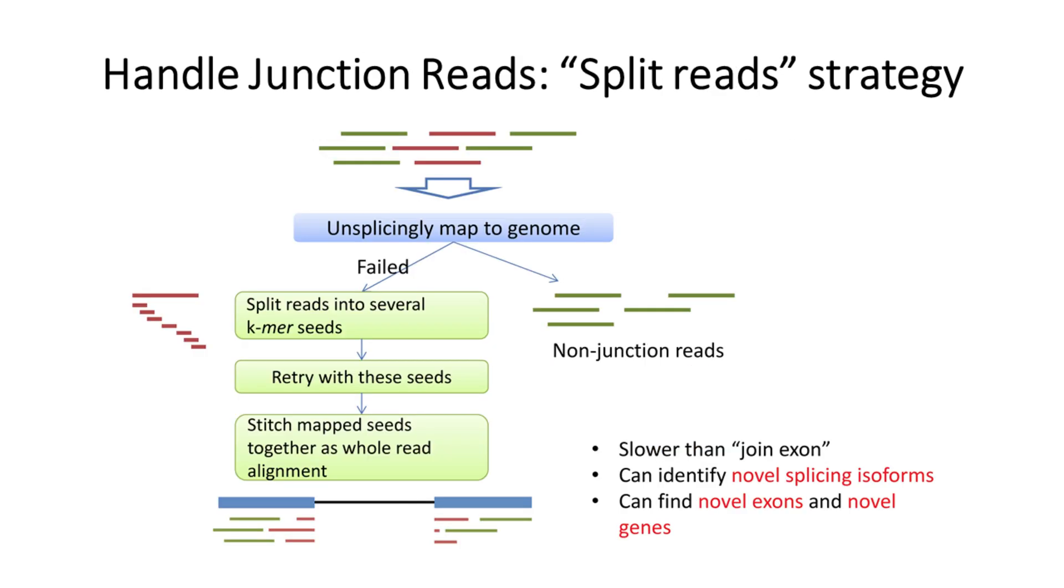We can turn to split reads strategy to handle this problem. Similar to previous mapping algorithms for DNA reads, the split read strategy will also first map non-junction reads to the genome in an unspliced way. For those junction reads that cannot be directly mapped, they will be sliced into multiple seeds with length k to retry the mapping, which resembles the BLAST method. In other words, this strategy tries to find junction site at a finer granularity. Finally, mapped seeds that are close to each other are combined to obtain the final whole read alignment.